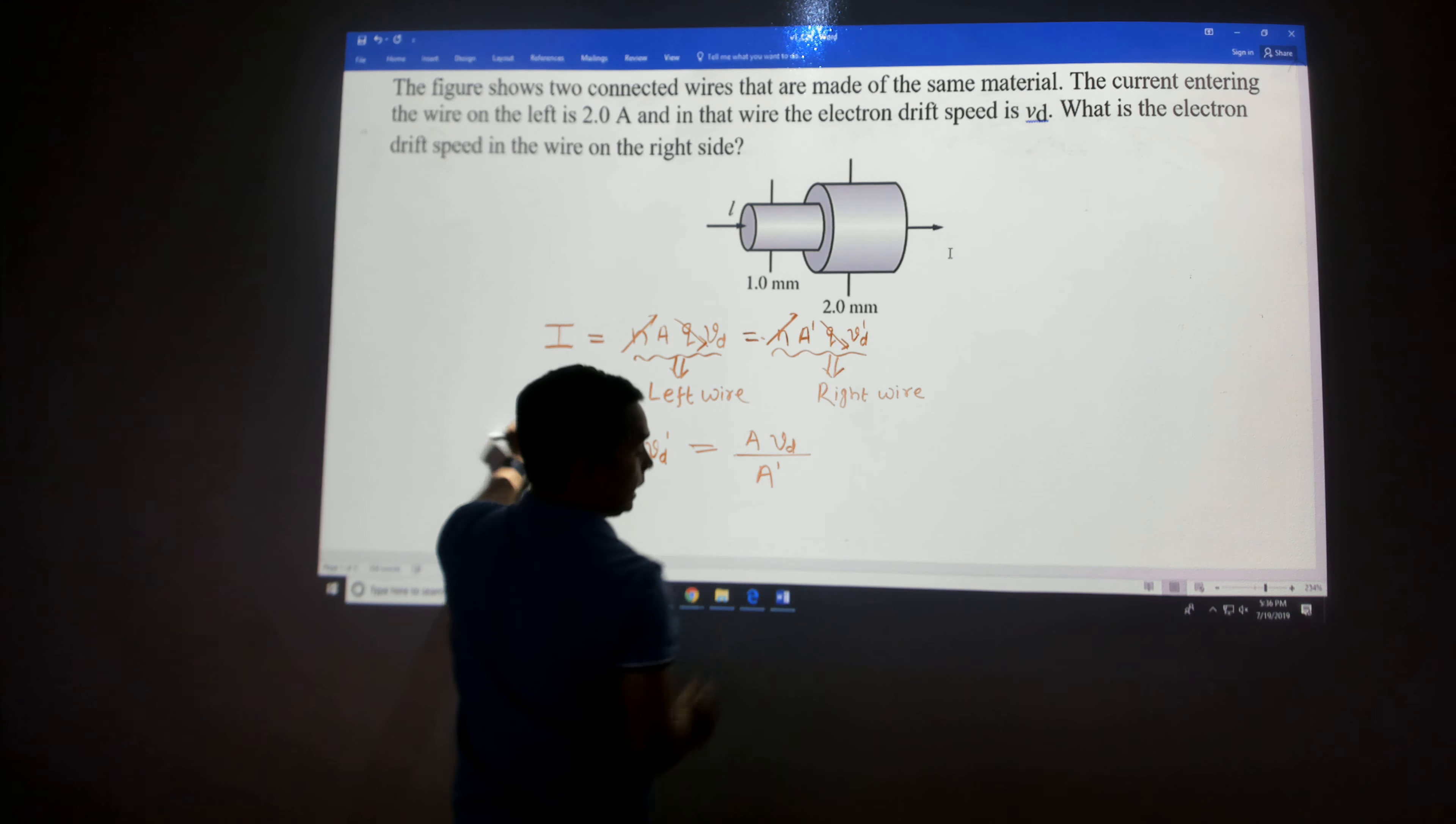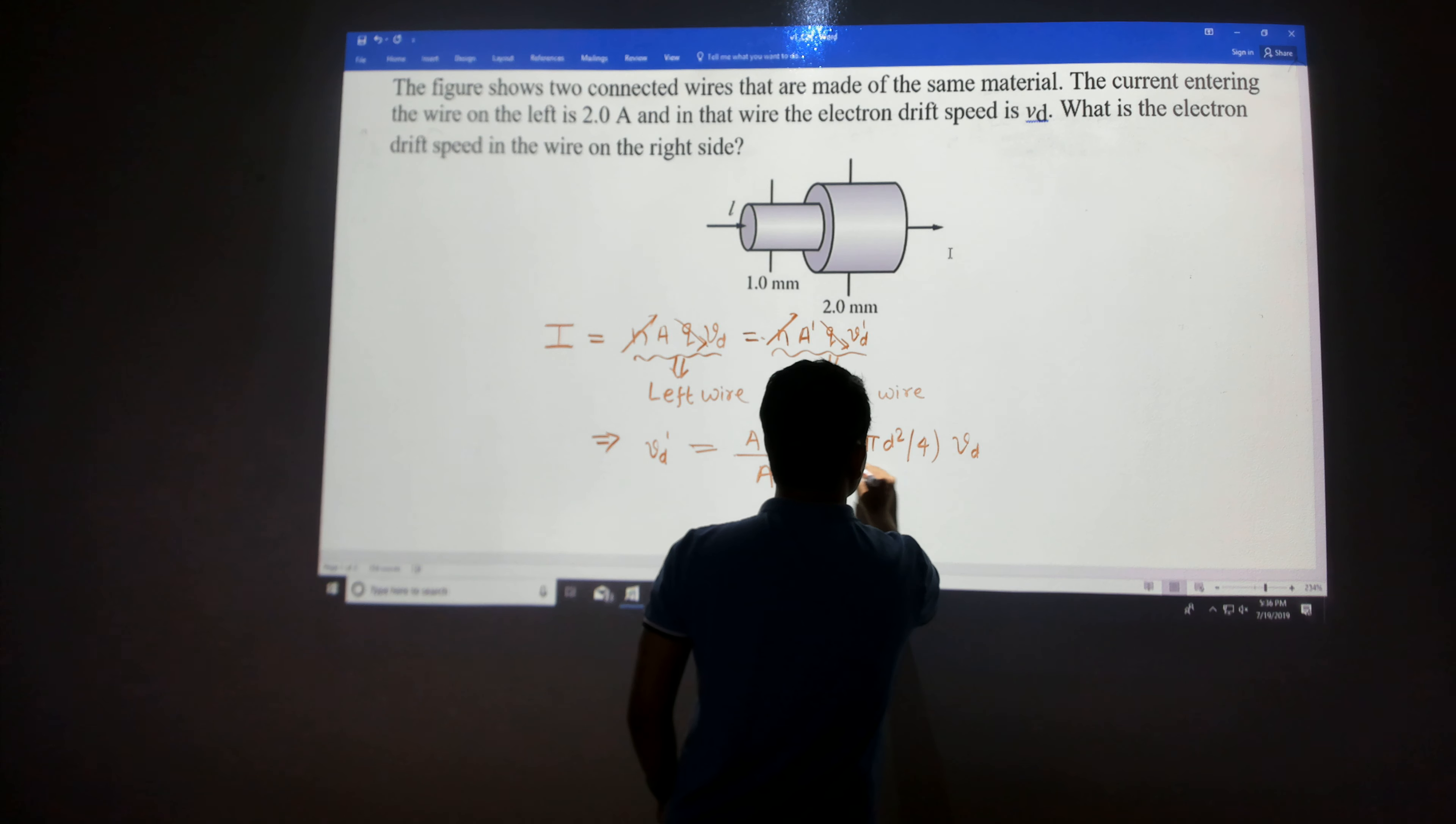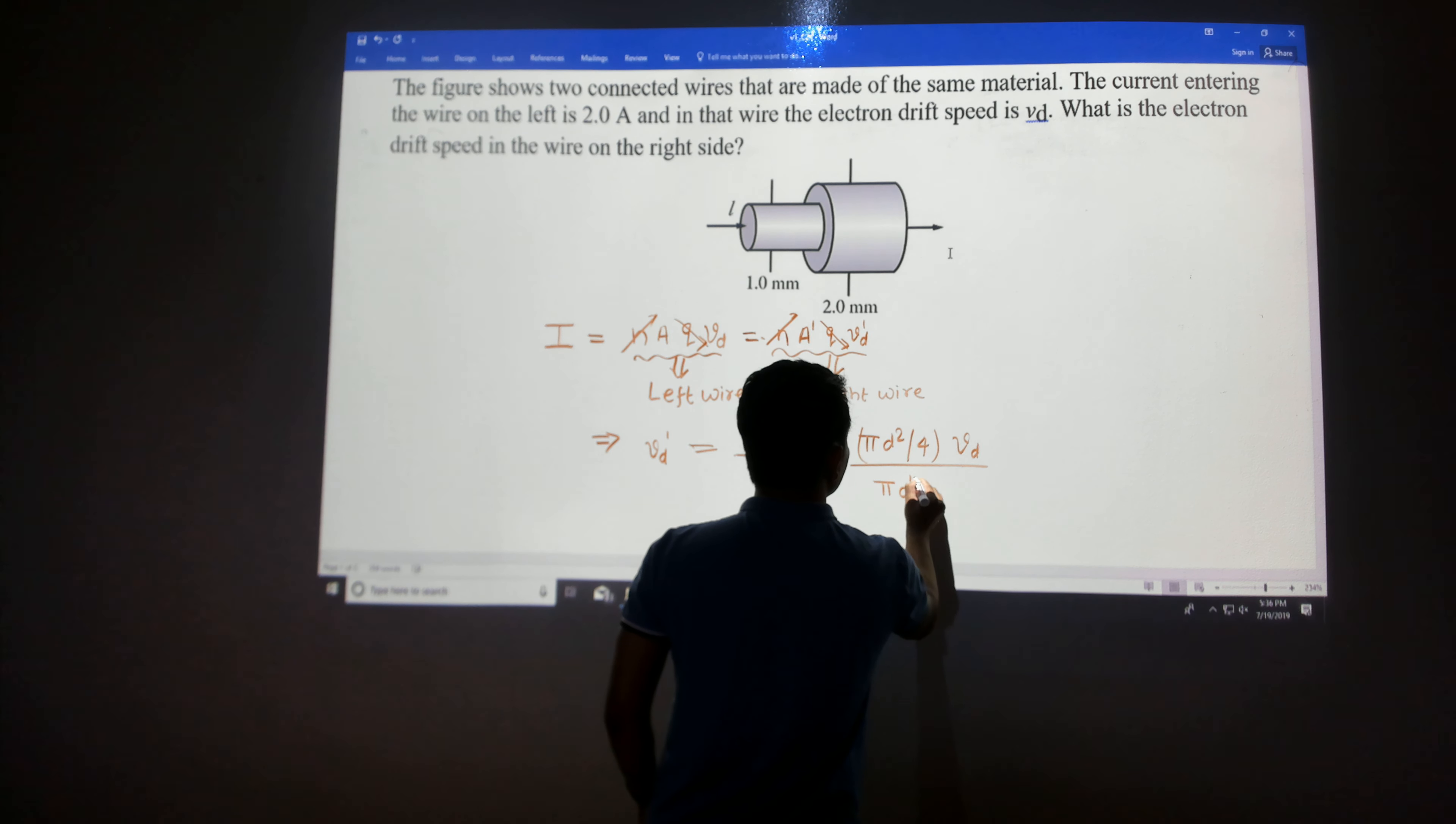A is the cross-sectional area, which is π D² / 4 times VD. And in this case, this is π D'² / 4.